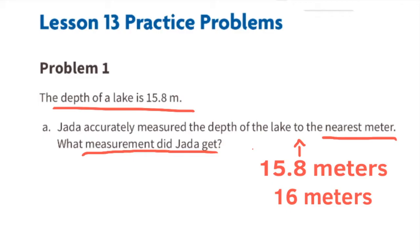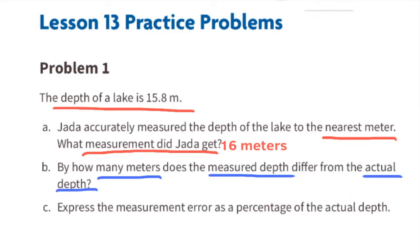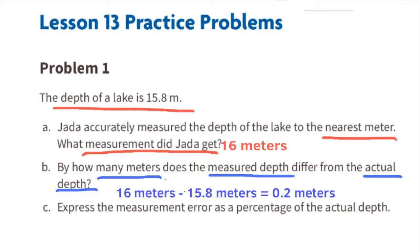Part B: By how many meters does the measured depth differ from the actual depth? 16 meters minus 15.8 meters equals 0.2 meters. The measured depth differs 0.2 meters from the actual depth.